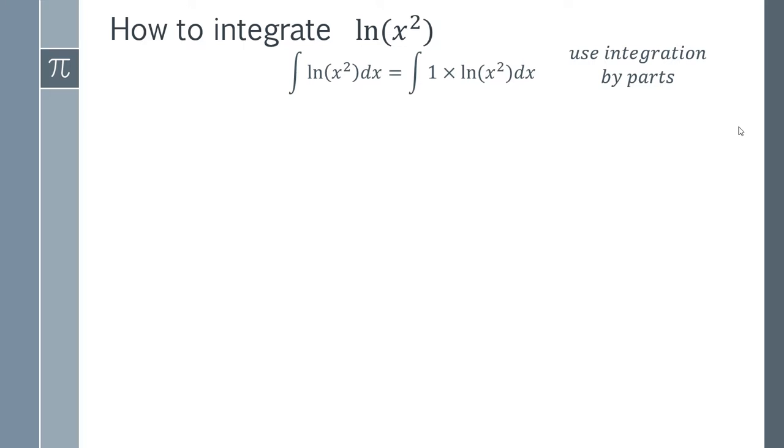our integration by parts formula. Our integration by parts formula says that the integral of two things, u and dv, multiplied together is equal to this expression here. In order to be able to use this we need